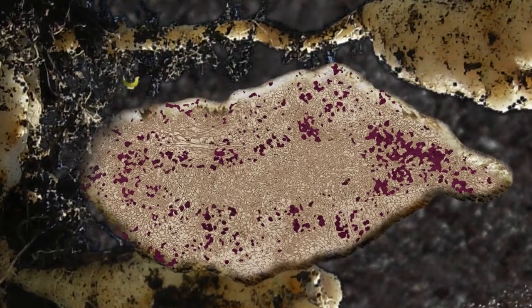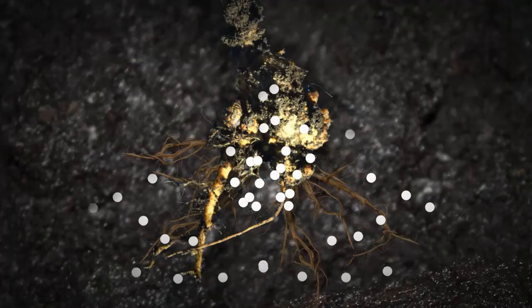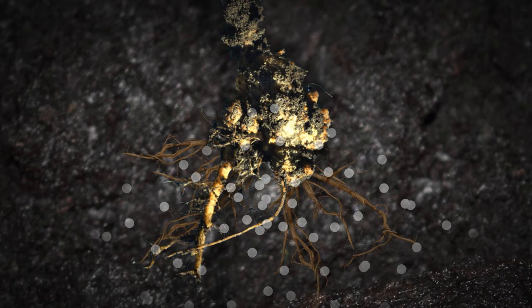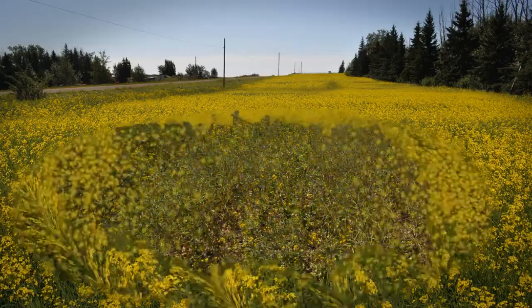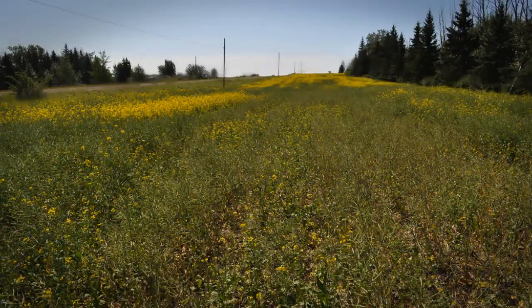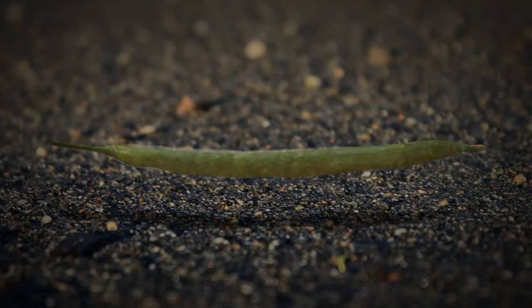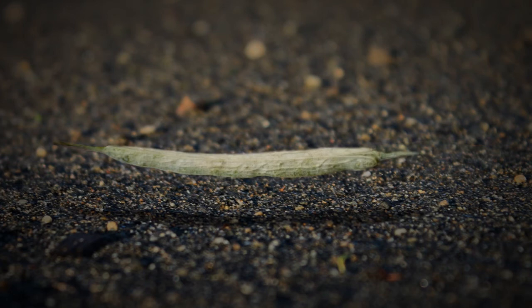As cells become infected and enlarged, the root no longer functions properly in the absorption and the translocation of water and nutrients to the above ground parts of the plant. This is where yield is lost. The earlier the infection and the greater the number of secondary zoospores, the greater the yield loss.